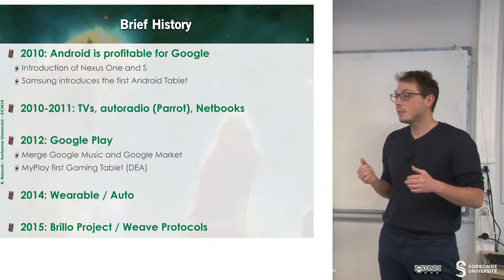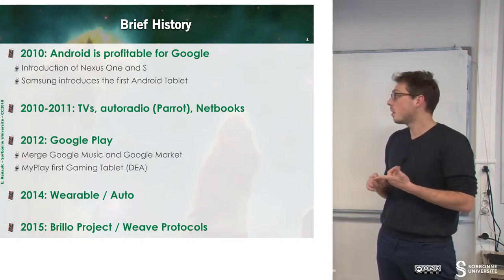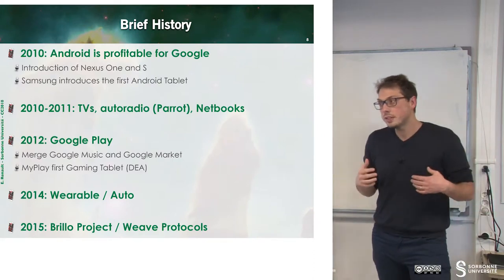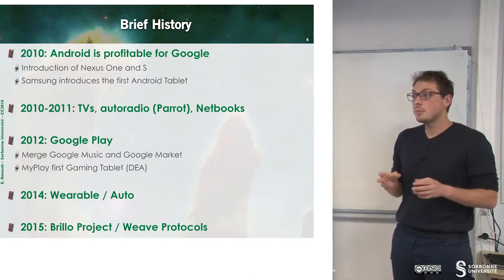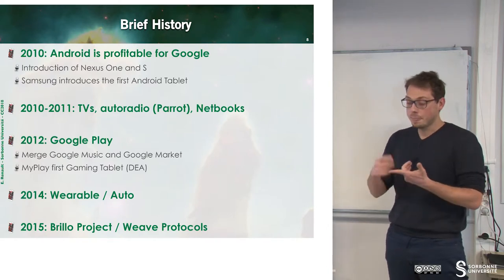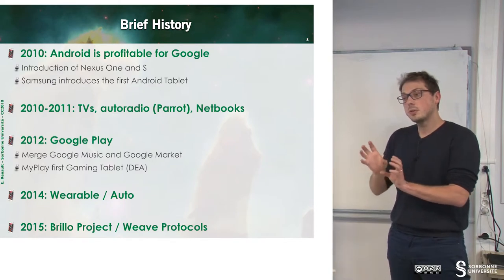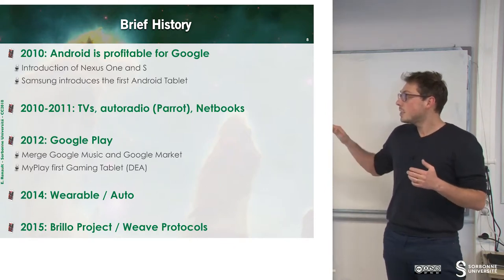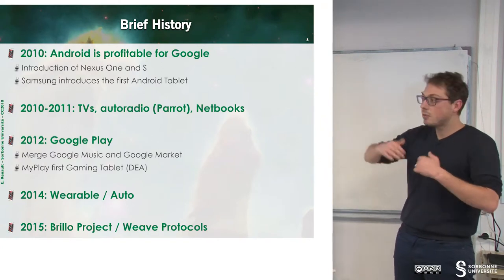In 2010 and 2011, Android was used for other purposes — for instance, car radios with Parrot Autoradio, TVs, and Netbooks. Google observed that Android was not as profitable as it wanted because the Apple ecosystem was better, featuring the App Store grouping music and applications. So Google decided to merge Google Music and Google Market, acquiring new users with a single platform, and from this time Google and Android overlapped Apple.